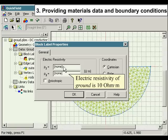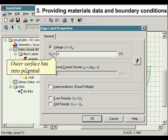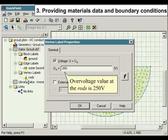Electric resistivity of ground is 10 ohm meters. Outer surface has zero potential. Over voltage value at the rods is 250 volts.